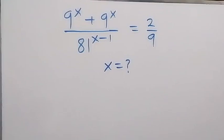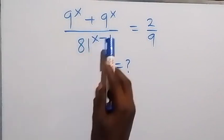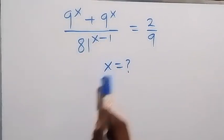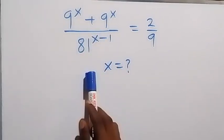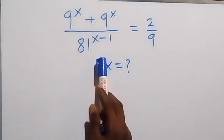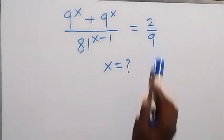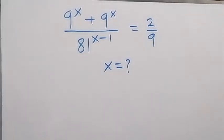Hello, you are welcome. How to solve this nice exponent math problem: we have 9 raised to power x plus 9 raised to power x, divided by 81 raised to power x minus 1, equals to 2 over 9.